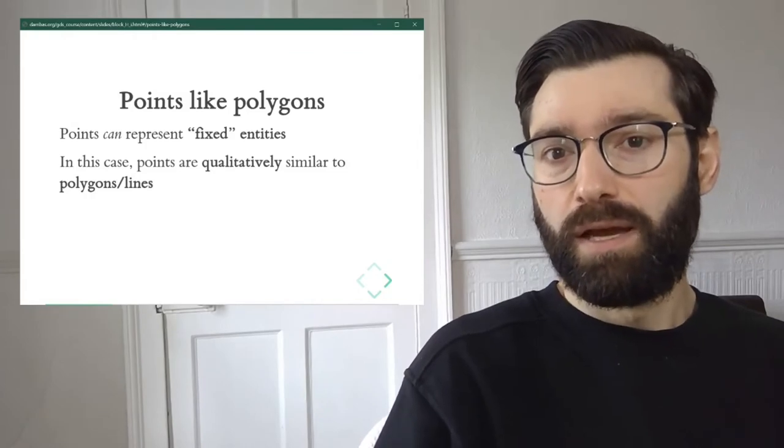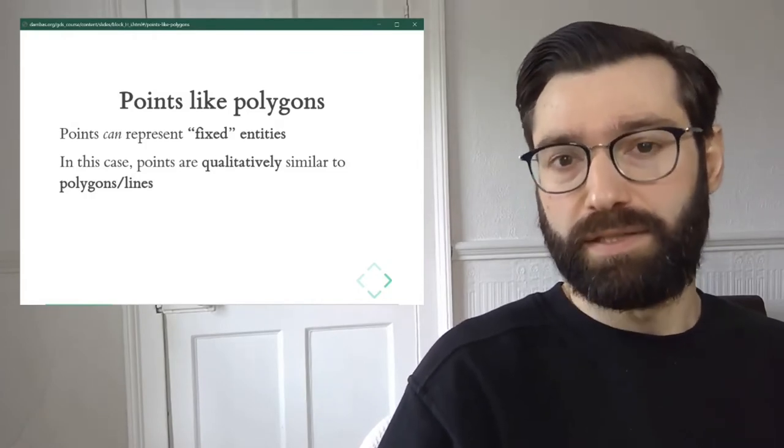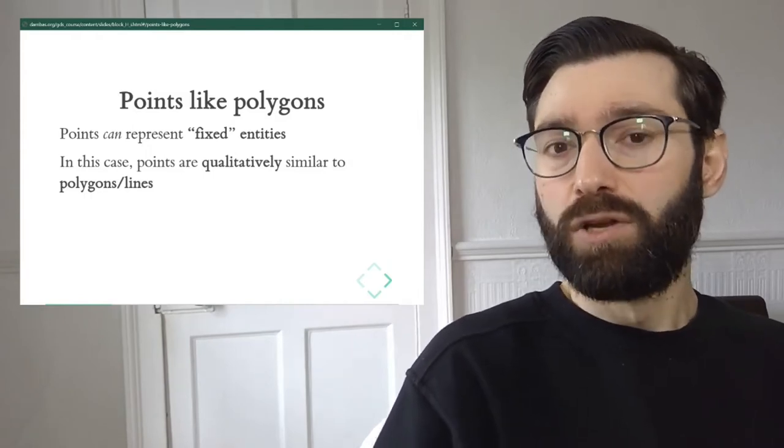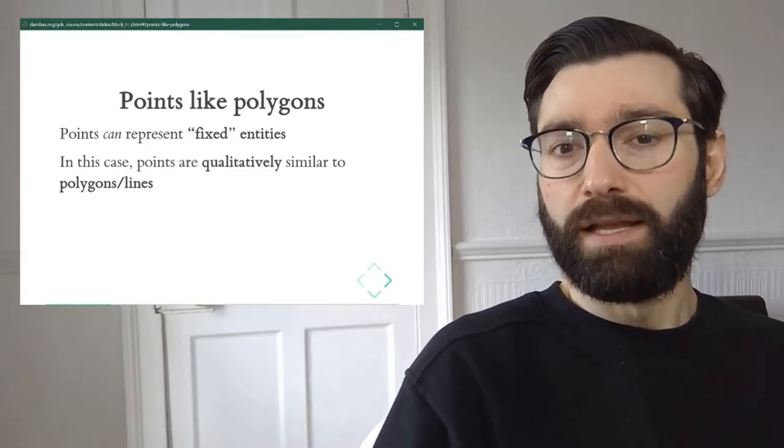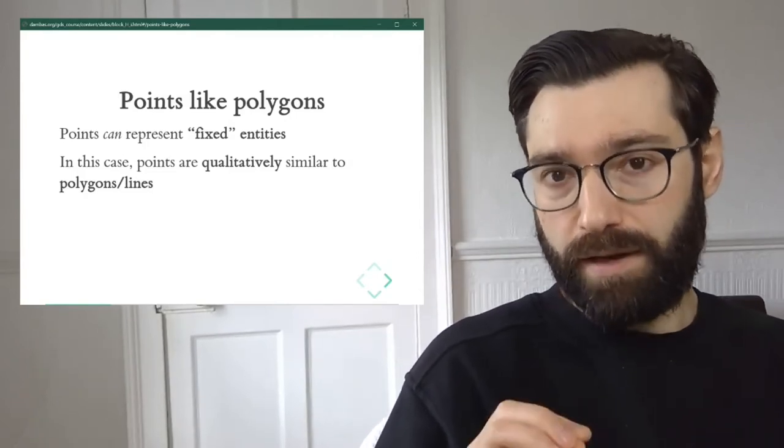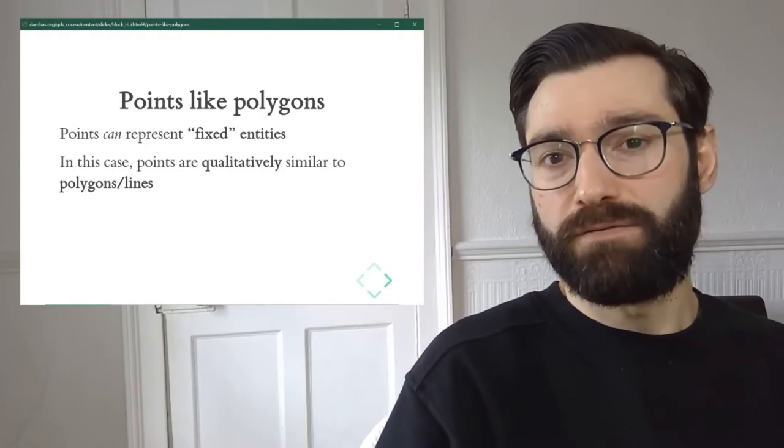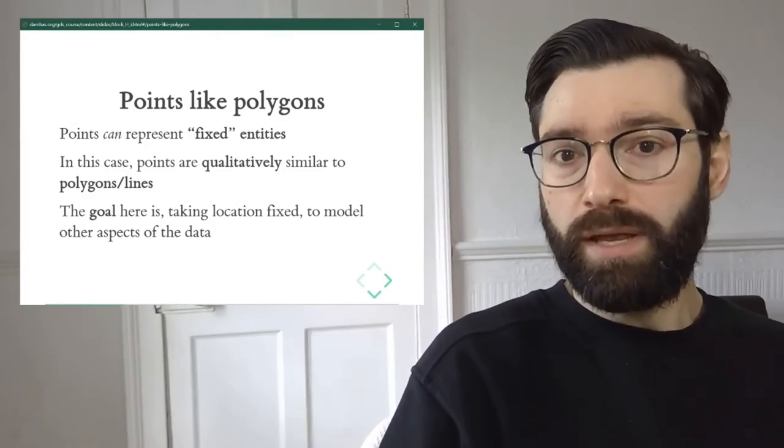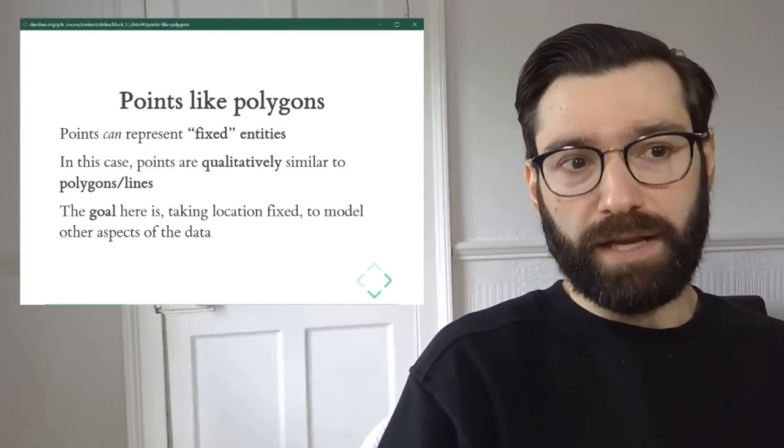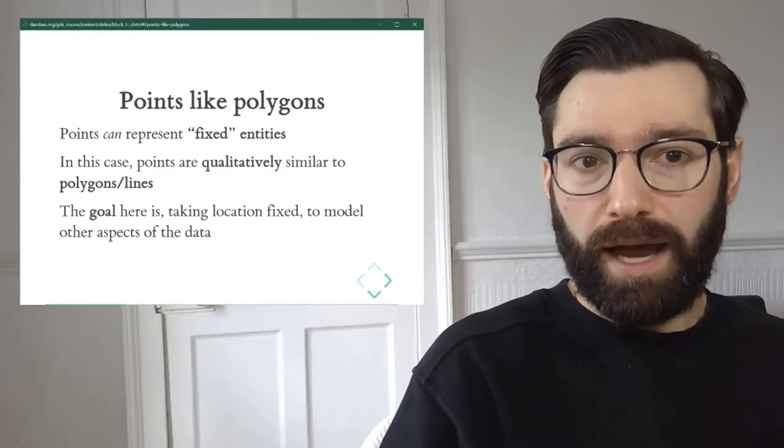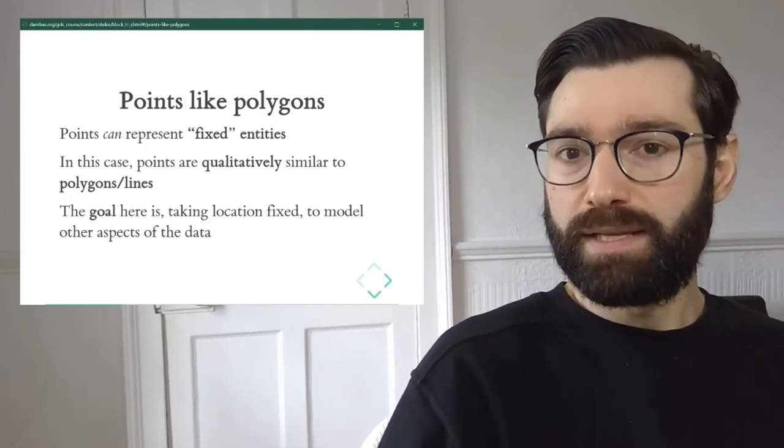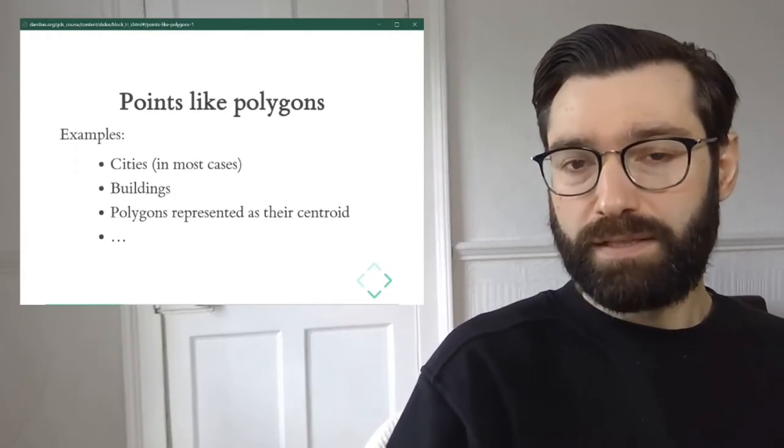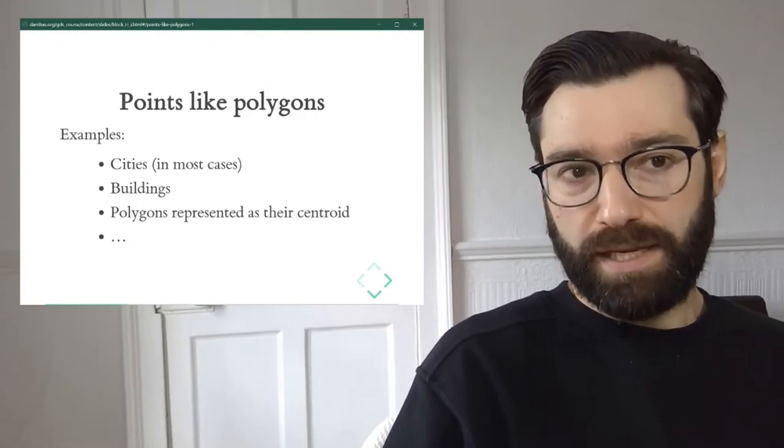For example, we could use spatial autocorrelation techniques such as Moran's I or local indicators of spatial association to look at a point dataset that we've been given, only and always as long as we understand points as fixed entities whose location is given. Because when we take this approach, the location is fixed and what we're trying to model is some attribute that is attached to this point.